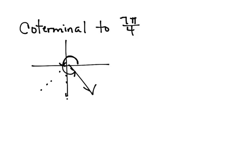So in radians, when I want to find an angle that is coterminal to an angle, I'm going to add 2 pi and subtract 2 pi.